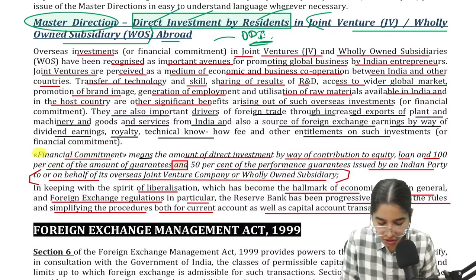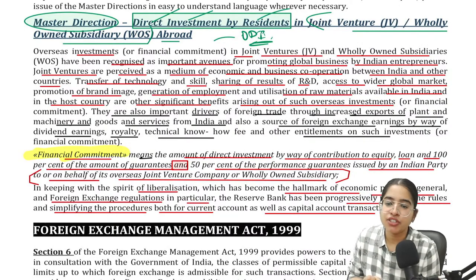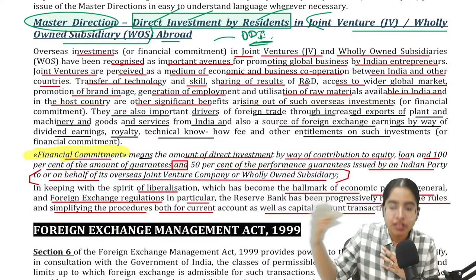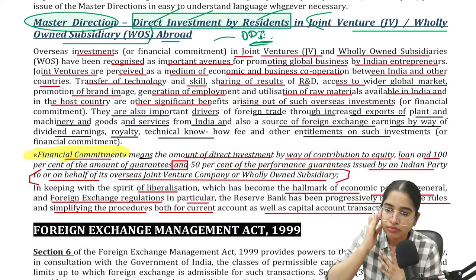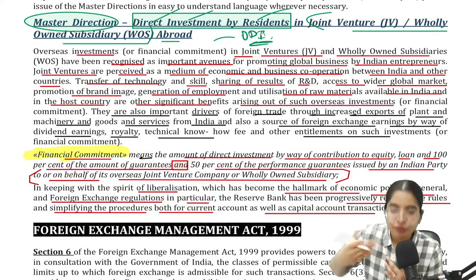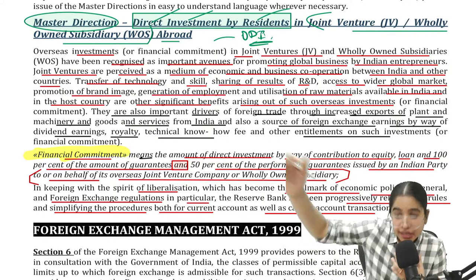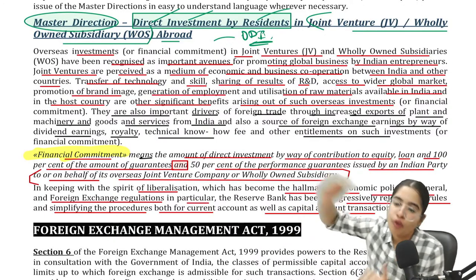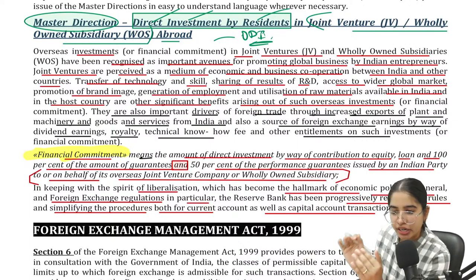The laws governing the setting up of business outside India include FEMA and RBI rules and regulations. You have to comply with the FEMA Act and RBI's master direction on direct investment by residents in joint ventures or wholly owned subsidiaries abroad. The definition of financial commitment is also relevant — when an Indian person or entity is directly investing in the equity or debt outside India, that is known as financial commitment.